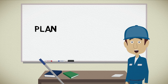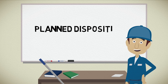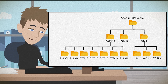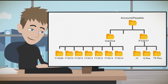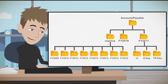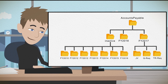The third and final principle is Planned Disposition. Let's go back to the example of accounts payable records. Keeping two years of active and five years of inactive records is common best practice in accounting departments. Every year, Lars separates the active accounts from the inactive ones and places them into their respective folders. At the end of the cycle, we go to the folder that is ready for destruction — in this case, the FY2009 folder and all of its contents.